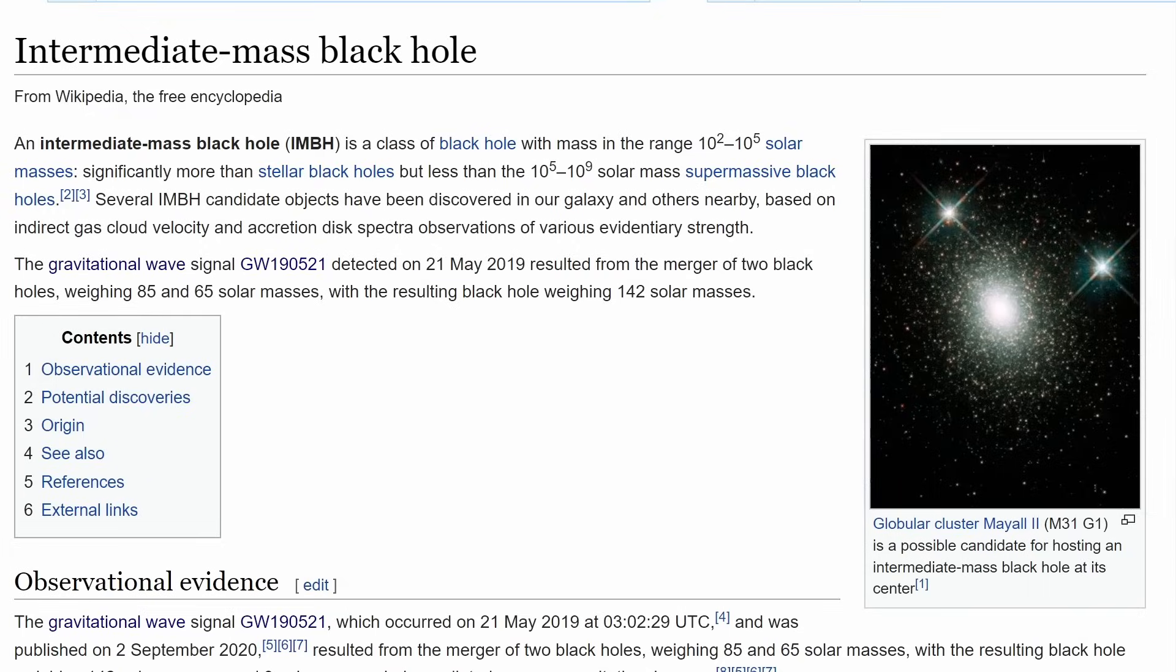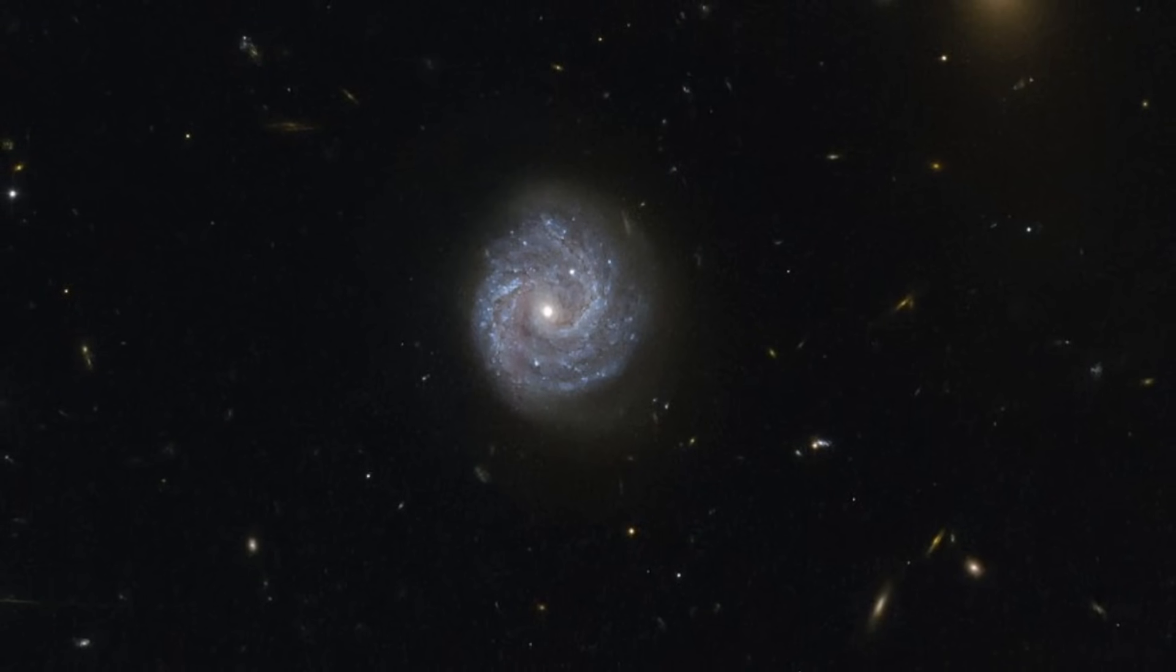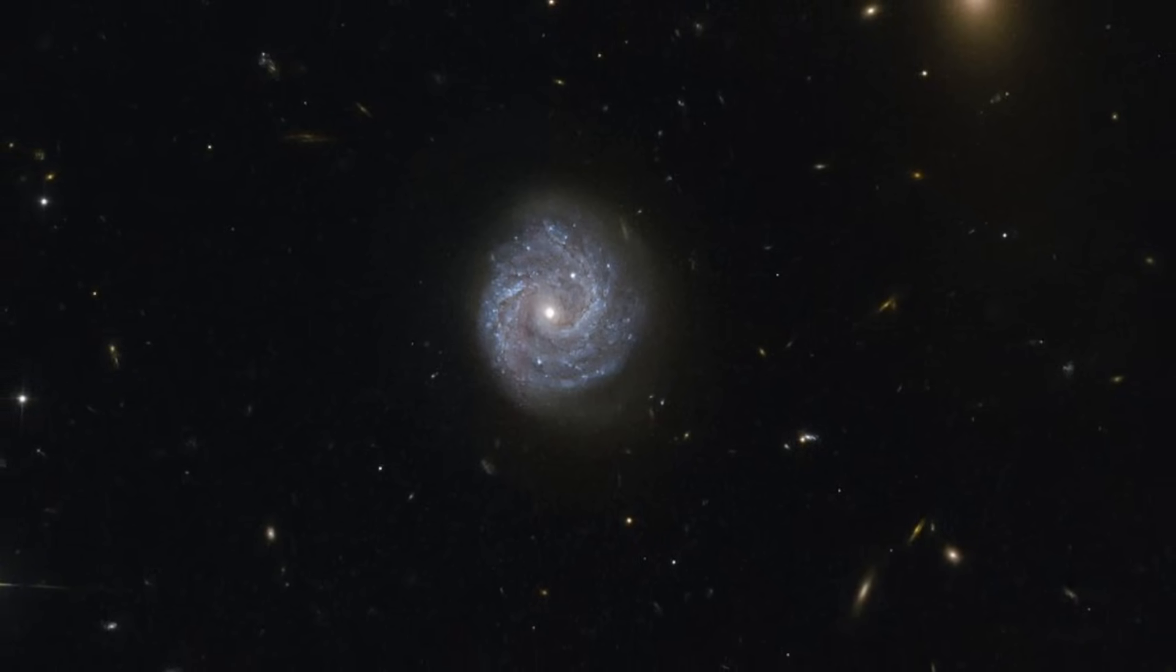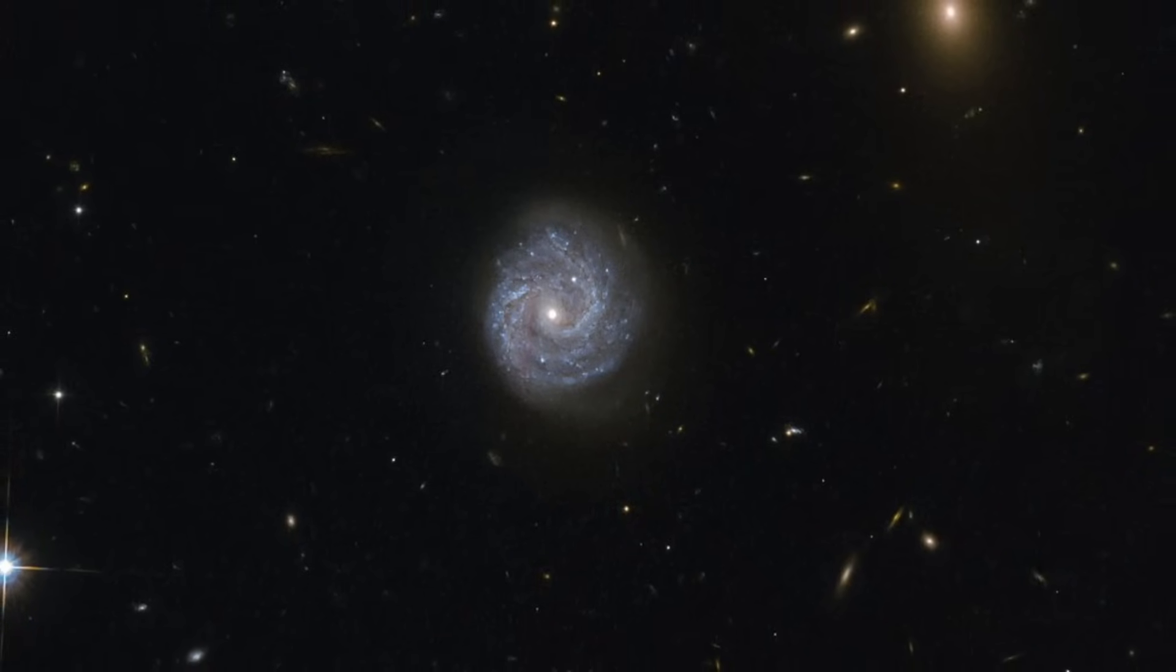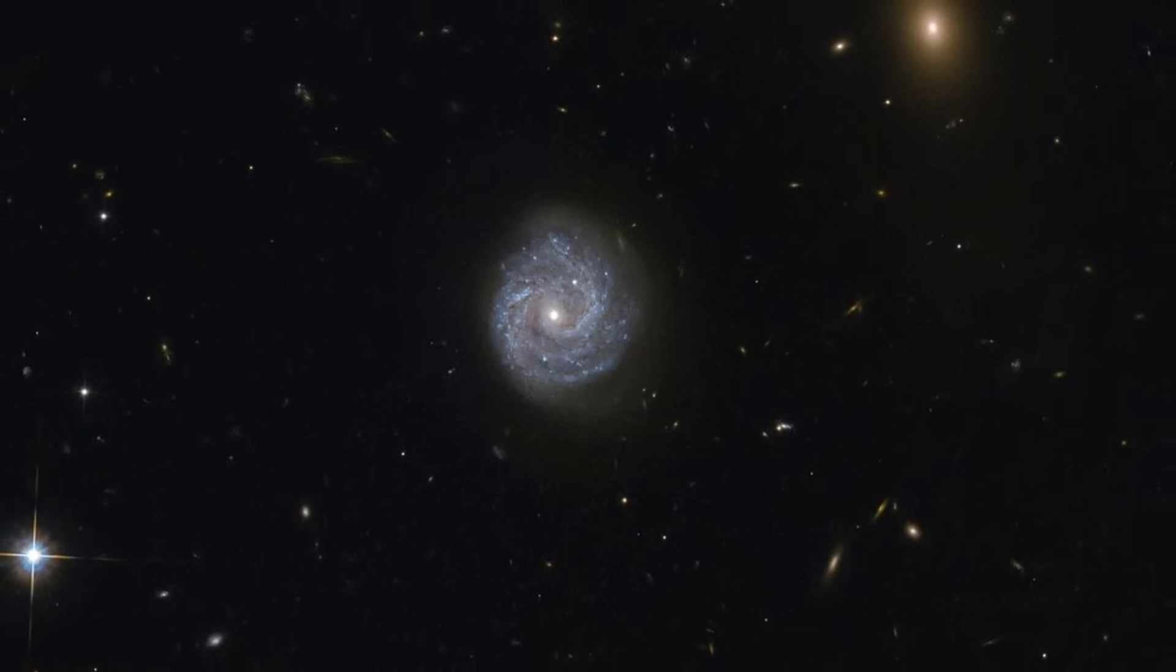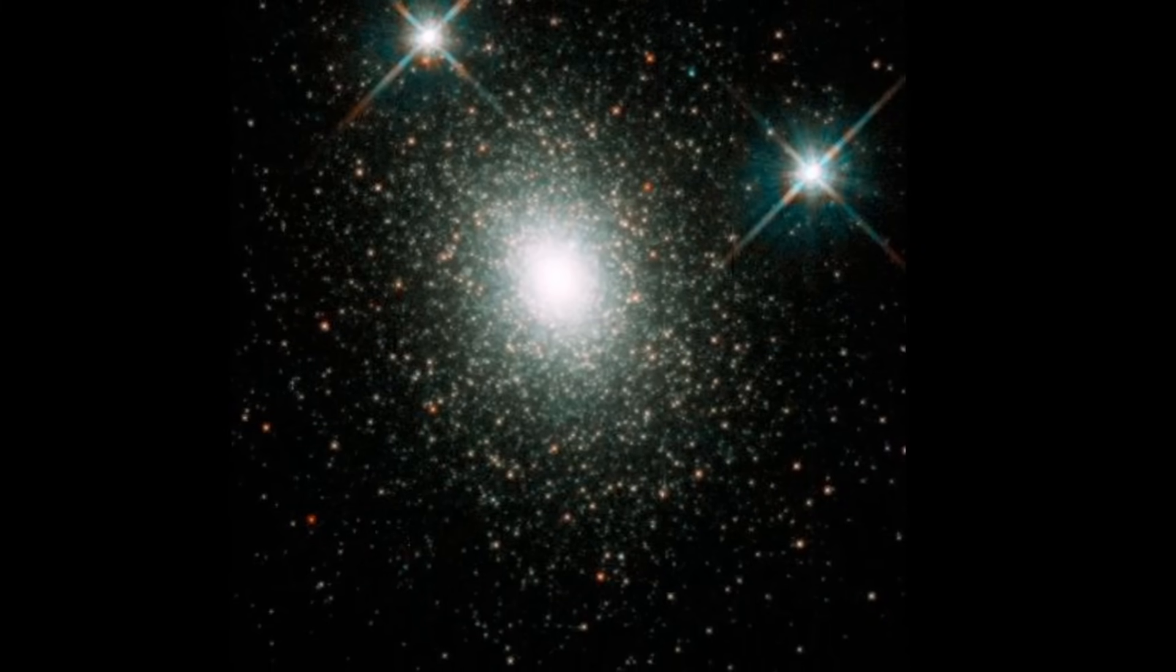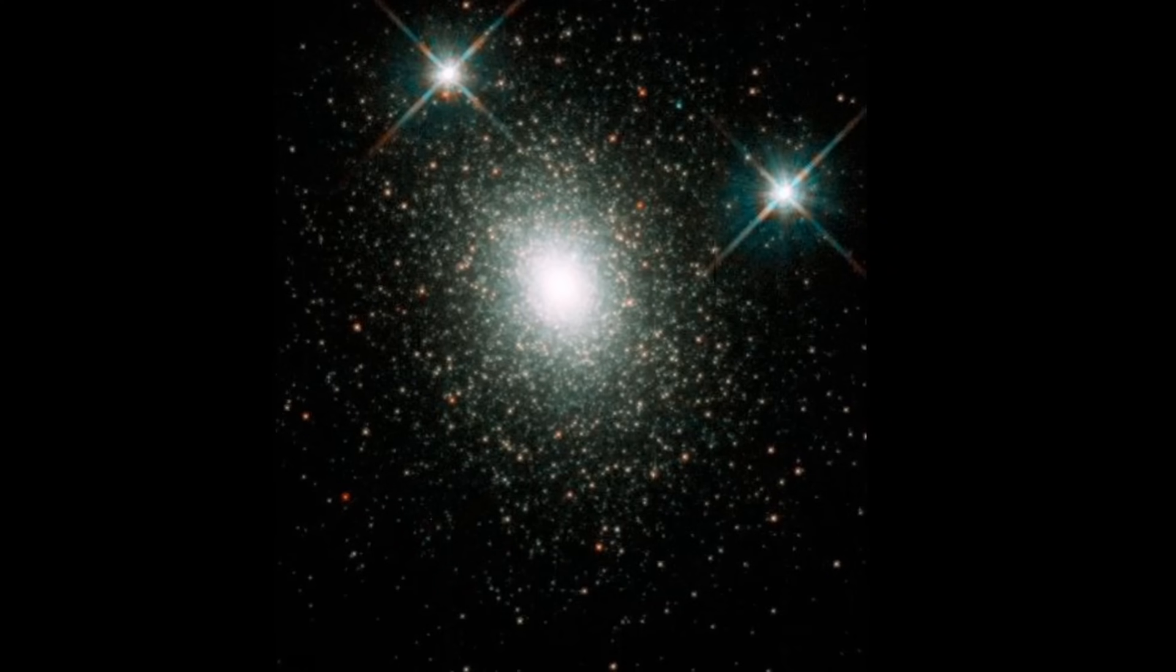The black holes we've discussed in some of the previous videos, whose origin only recently became more apparent as we started discovering their signs across the universe. For example, there is an intermediate mass black hole in the middle of this spiral galaxy with a relatively long name, RX J1140.1 plus 0307. And another one probably located inside the globular cluster known as M31G1.